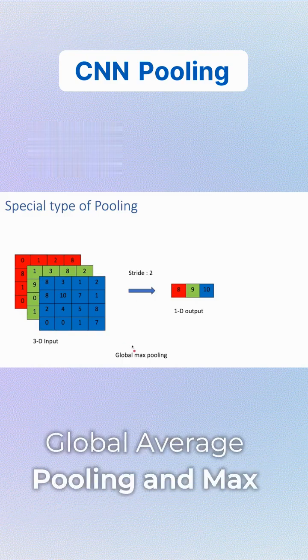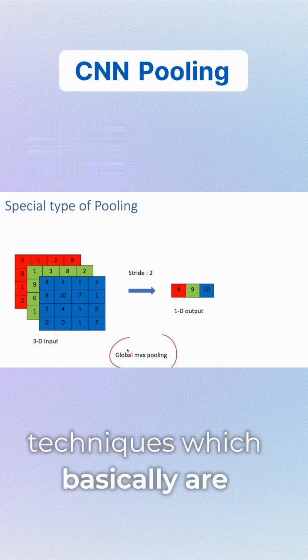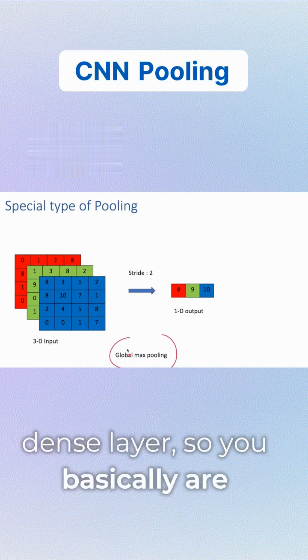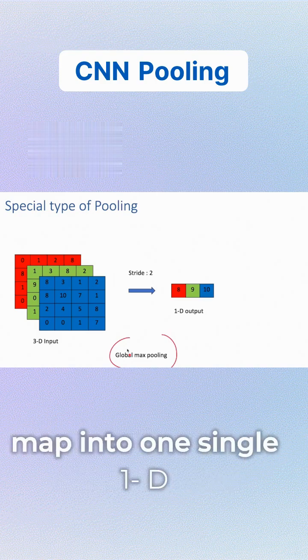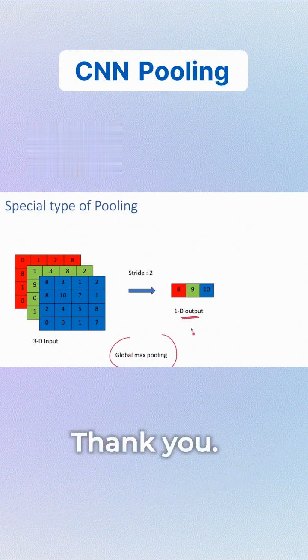Global average pooling and global max pooling are two different techniques employed right before your dense layer. You're converting the dense feature map into one single 1D representation which acts as an input to your dense layer.